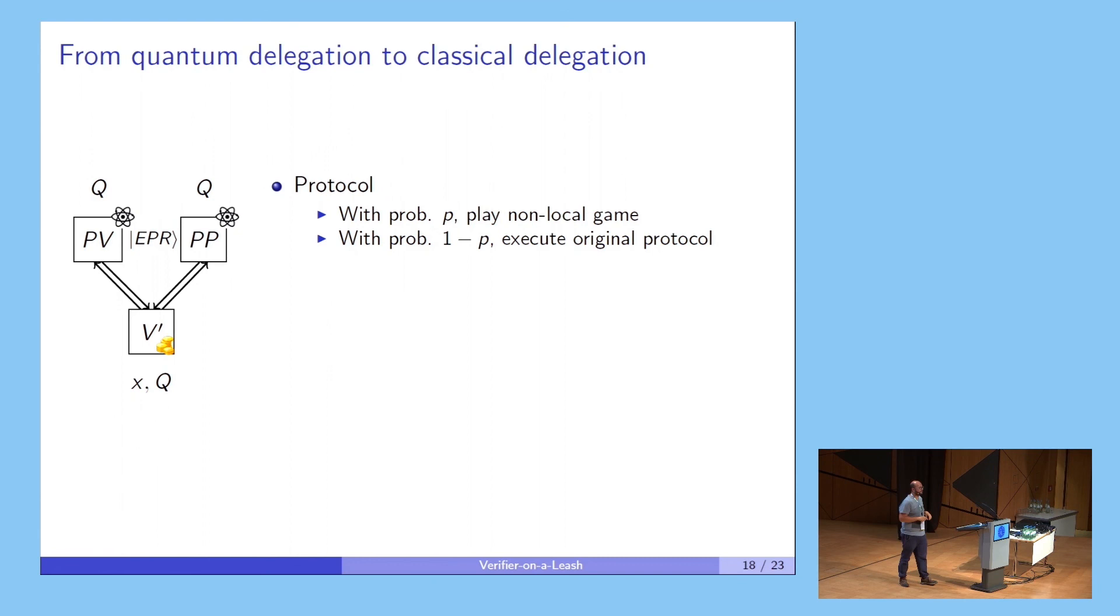Question: So the entanglement pairs are pairs just because there are two provers, but if you'd have three provers, you need a bigger entangled state? Answer: Yes, but then it's trickier because, as Zvika was saying about monogamy of entanglement, you could not have three-party-type EPR pairs, so then it becomes a bit more tricky.